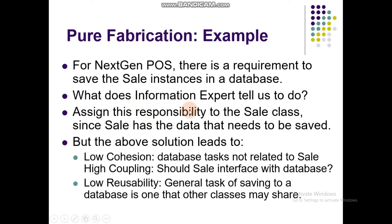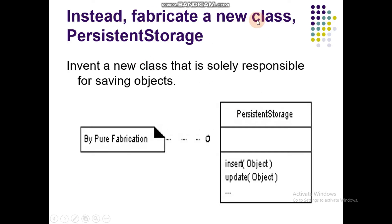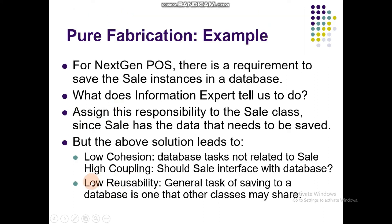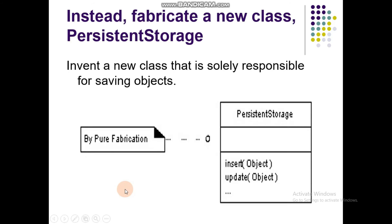Instead of assigning save responsibility to the Sale class following Information Expert, we fabricate a new class. For example, a PersistentStorage class. This new class will be solely responsible for saving objects and will not do any other work — only one job, one responsibility.